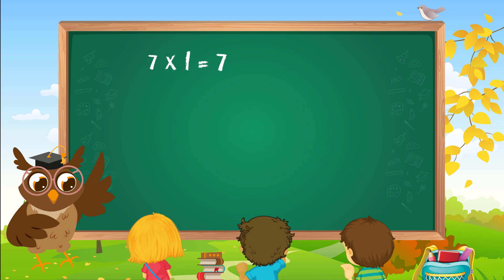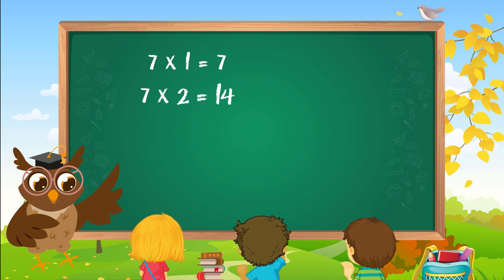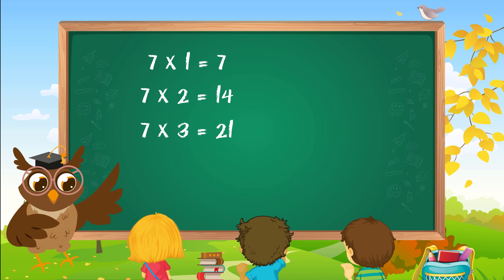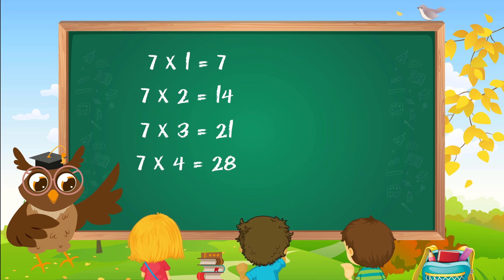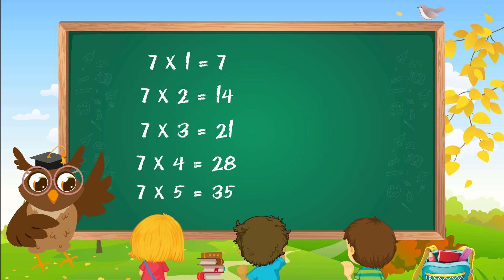Seven ones are seven. Seven twos are fourteen. Seven threes are twenty-one. Seven fours are twenty-eight. Seven fives are thirty-five.